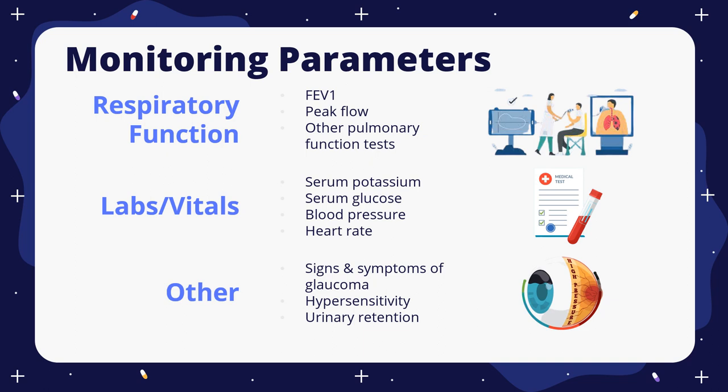Peak flow is how quickly the patient can blow out air from their lungs and will indicate the level of tightness and inflammation severity occurring in the airways. For labs and vitals, we want to measure serum potassium, serum glucose, blood pressure, and heart rate. In patients using Anoro Ellipta, side effects may include low levels of potassium, high levels of blood sugar, or increased blood pressure and heart rate due to the LABA component, vilanterol.